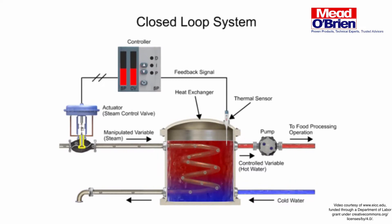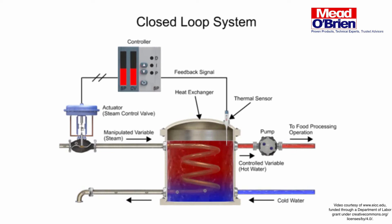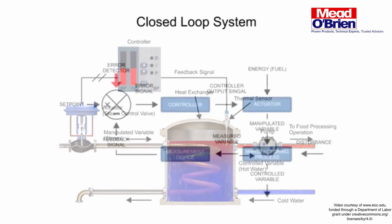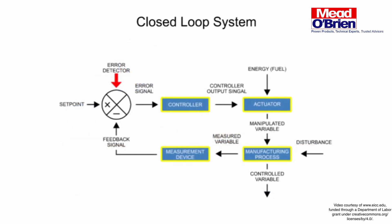Cold water enters the bottom of the vessel where the water temperature rises as it passes through steam-heated coils before flowing out of the pump at the top. Each block represents a function of the operation. Lines connecting the blocks indicate input and output signals of each function, with directional arrows indicating the process flow.